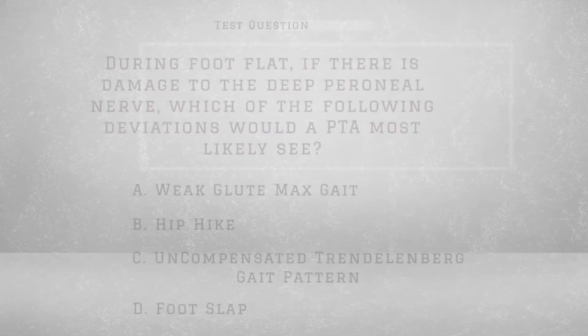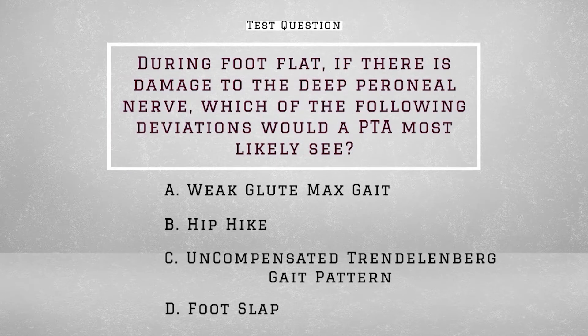Now for the test question: during foot-flat, if there is damage to the deep peroneal nerve, which of the following deviations would a PTA most likely see? A, weak glute max gait; B, hip hike; C, uncompensated Trendelenburg gait pattern; or D, foot slap?